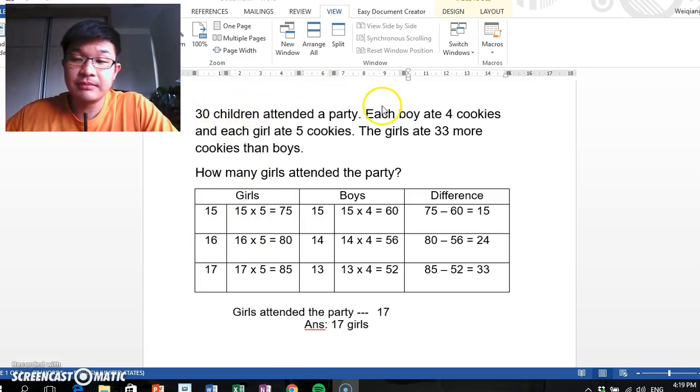30 children attended a party. Each boy ate 4 cookies and each girl ate 5 cookies. The girls ate 33 more cookies than the boys. How many girls attended the party?